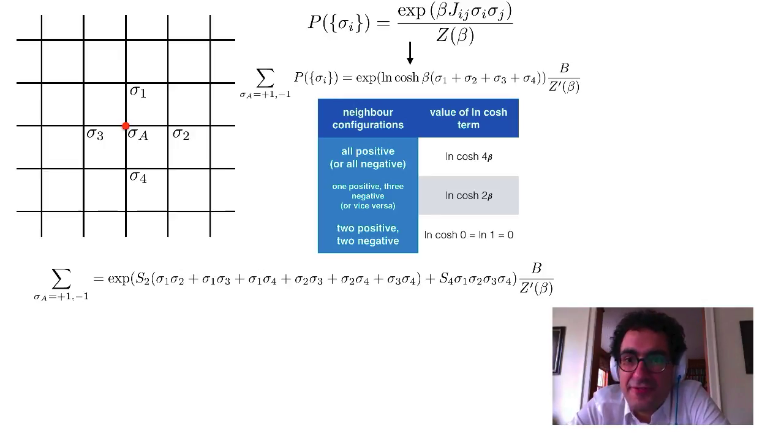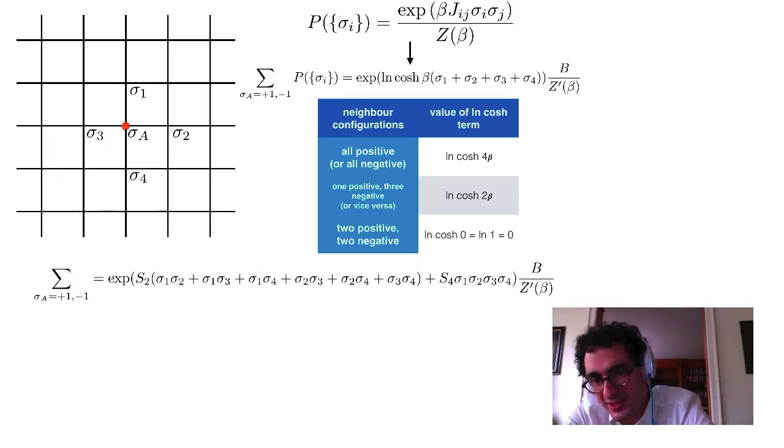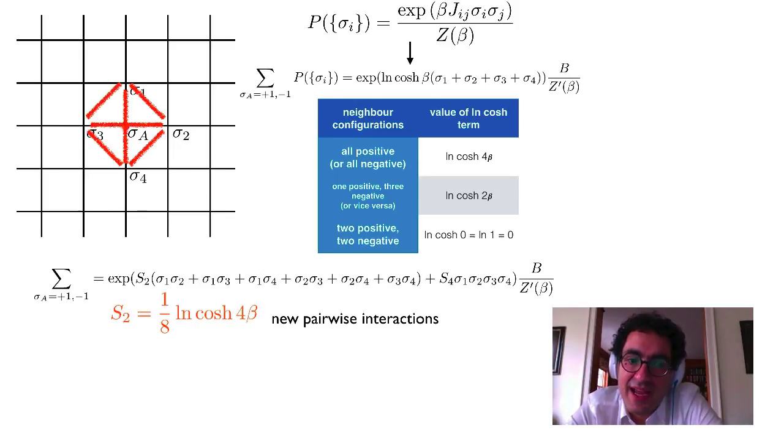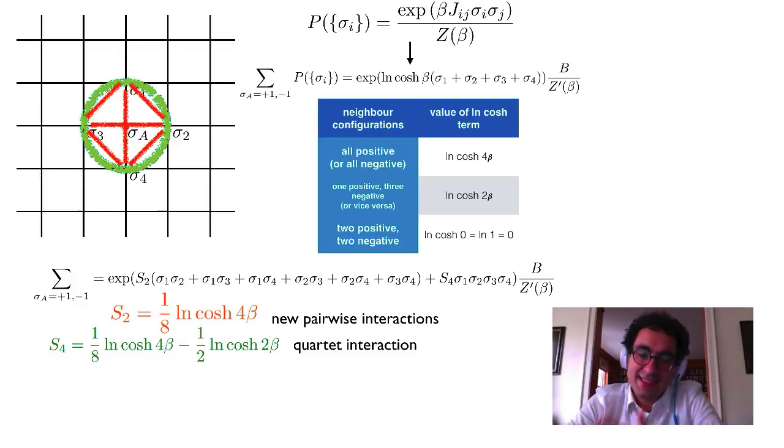Now we're going to do a little magic. And it turns out that we can phrase that table by writing it in terms of pairwise products of sigma, times some overall constant s2, plus a quartet factor multiplied by some constant s4. And in fact, those constants turn out to be s2 is one eighth log cosh 4 beta, and s4 is this complicated sum of one eighth log cosh 4 beta minus one half log cosh 2 beta. And what you can do here is plug in particular values of sigma 1, sigma 2, sigma 3, and sigma 4 to confirm that the s2 and s4 definitions actually make the table work out. Now there's one thing that's missing here is an overall constant offset factor. But all that you've done is add an additional constant term to the system, and that can be reabsorbed into that partition function on the bottom there.